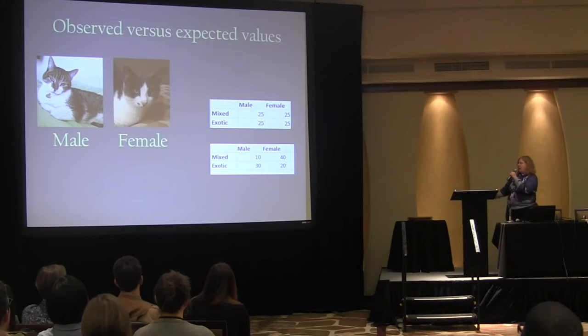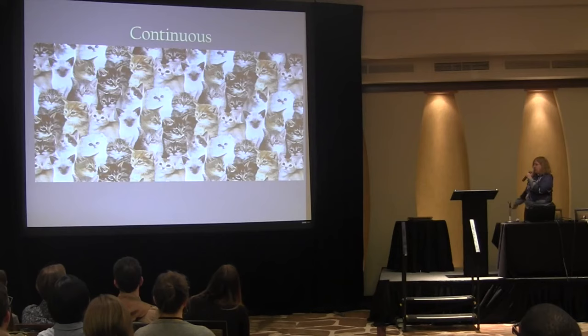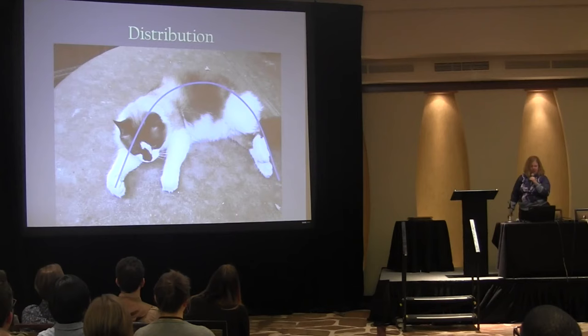Data can also be continuous — for example, the number of cats, the age of the cat, or the height of your cat.